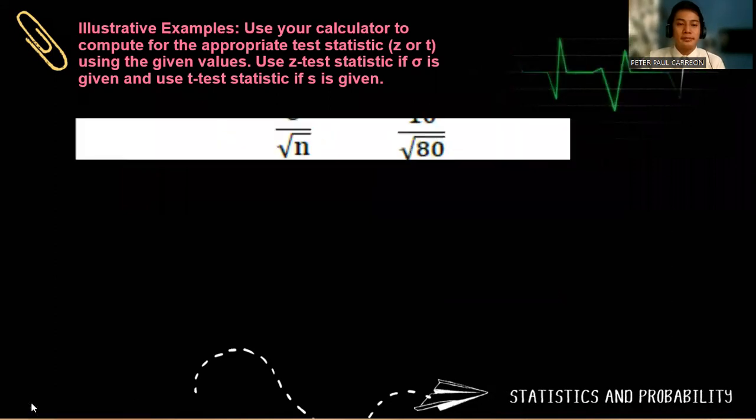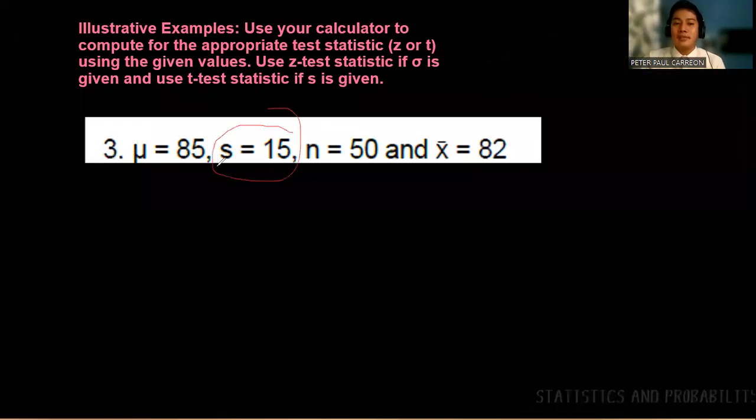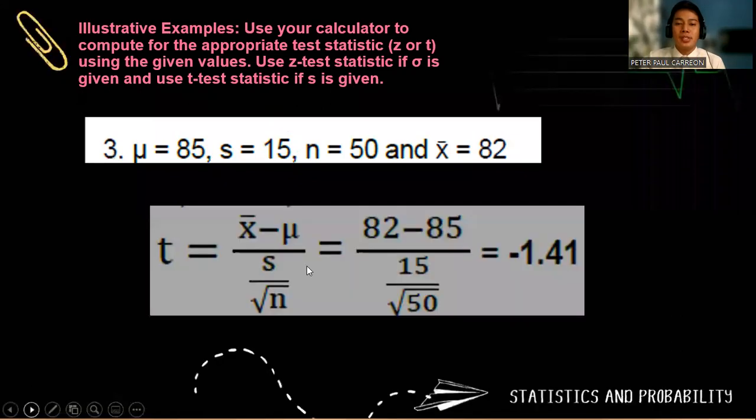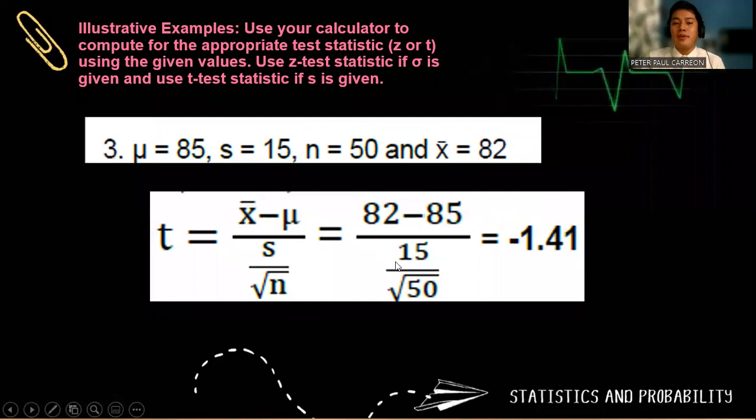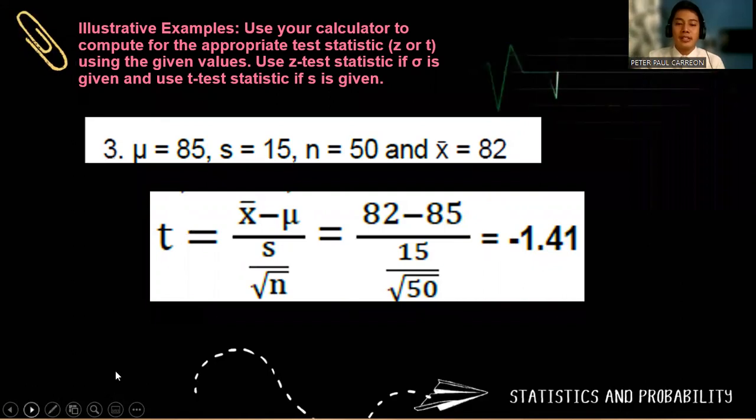Number three. Mu equals 85, S equals 15, N is 50, and the sample mean X bar is 82. Notice that our S is given. So sigma is unknown. Using this one, we have 82 minus 85 over 15 over the square root of 50. We use a T test for this one. The answer is negative 1.41.